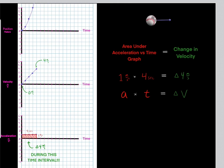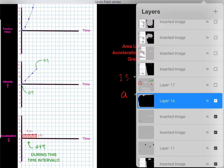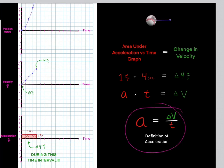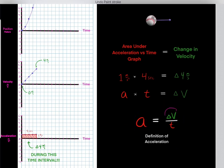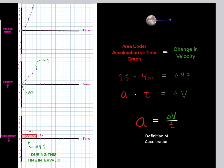We can prove this because what we're doing is taking the acceleration and multiplying it by time to get the change in velocity. If we divide both sides by t, we get the definition of acceleration: acceleration equals the change in velocity over time. So it makes sense that if we take the acceleration and multiply it by time, we get the change in velocity — that's what the area under the graph represents.